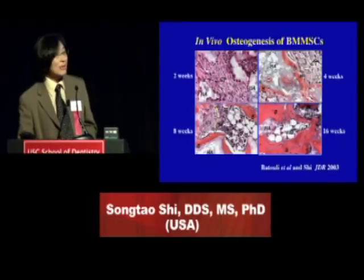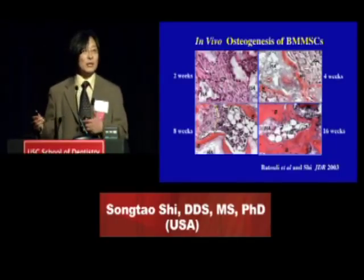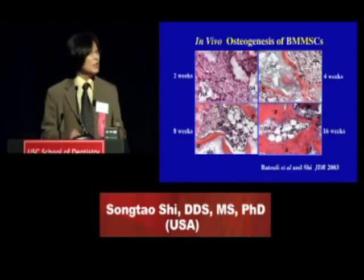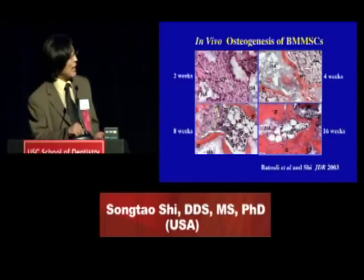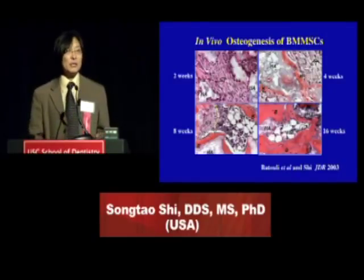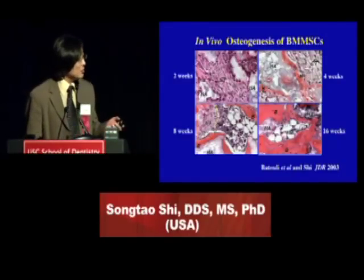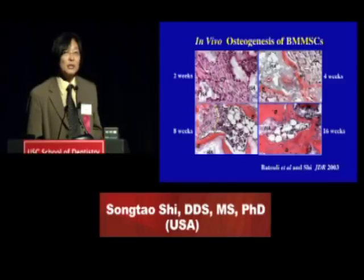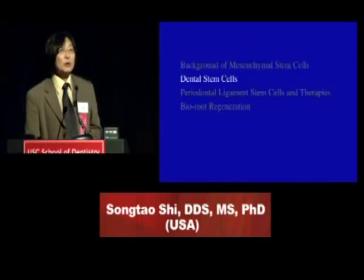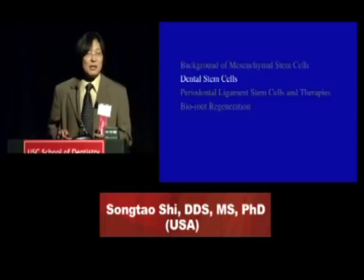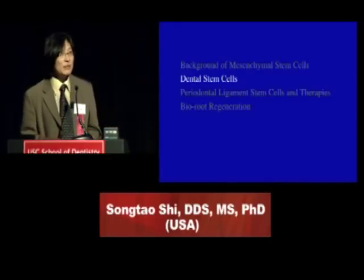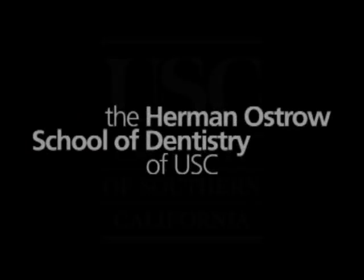When you put these cells in — for example, we put human cells into nude mice — initially nothing happens, but later they start to form bone and even bone marrow. That is a process we believe can be used for tissue engineering or tissue regeneration. So that is the general background on mesenchymal stem cells, basically starting from the first ones identified from bone marrow.